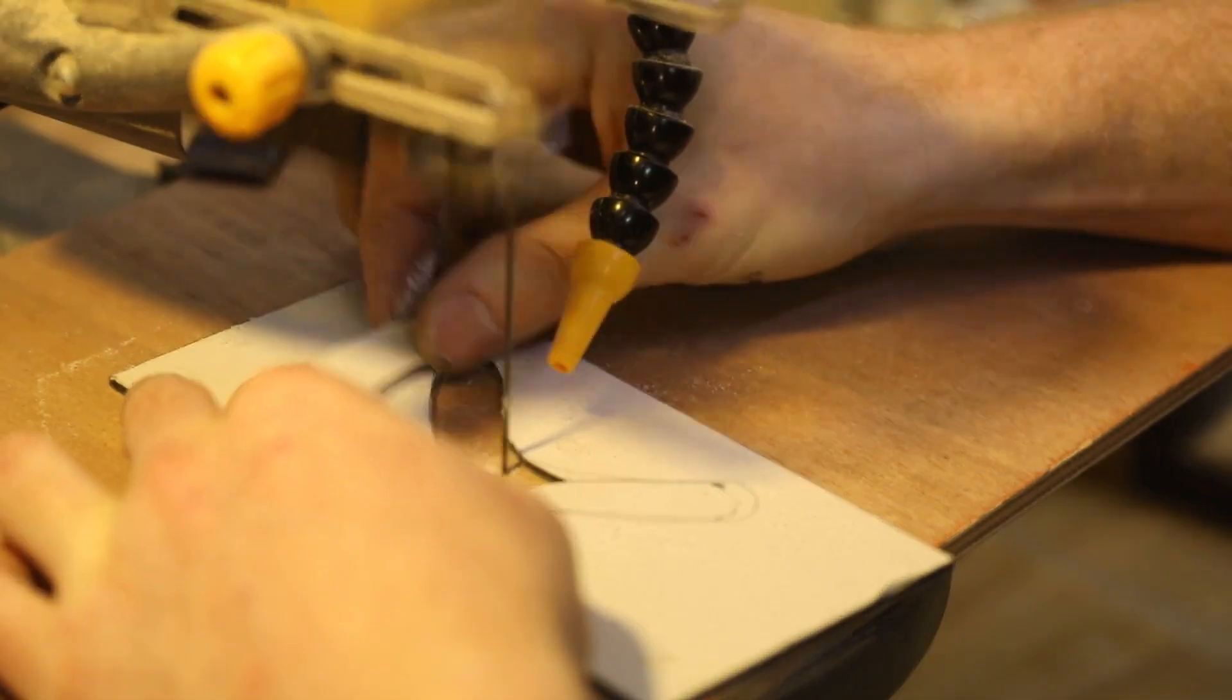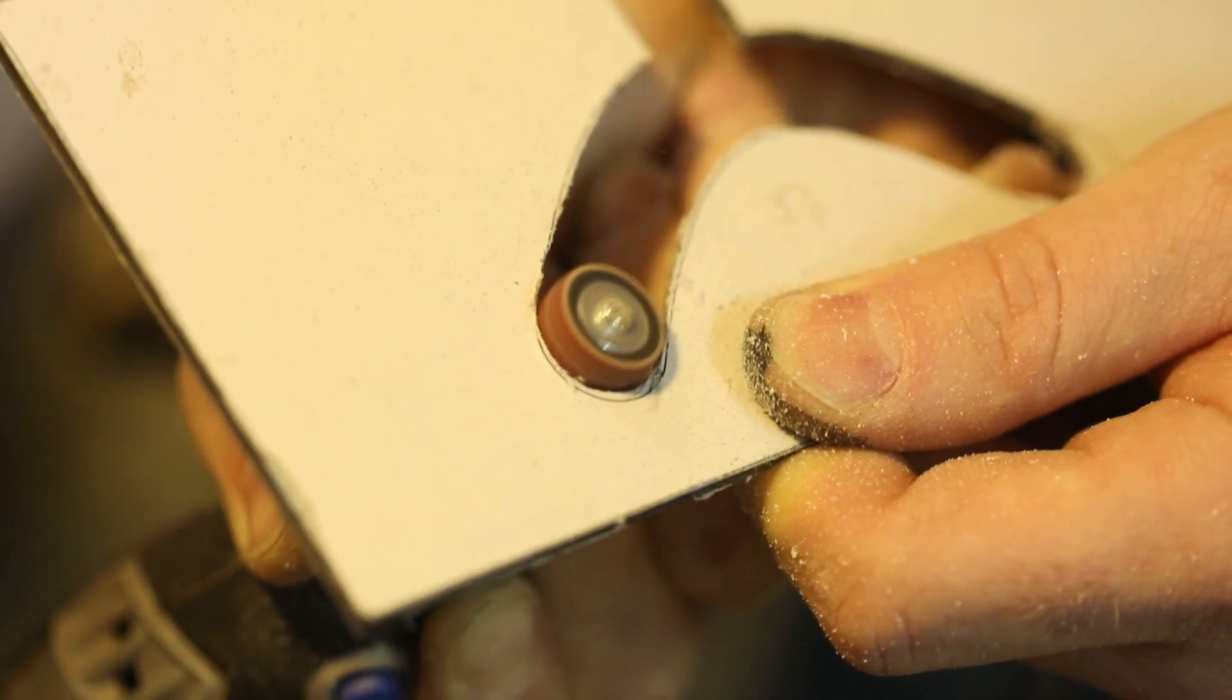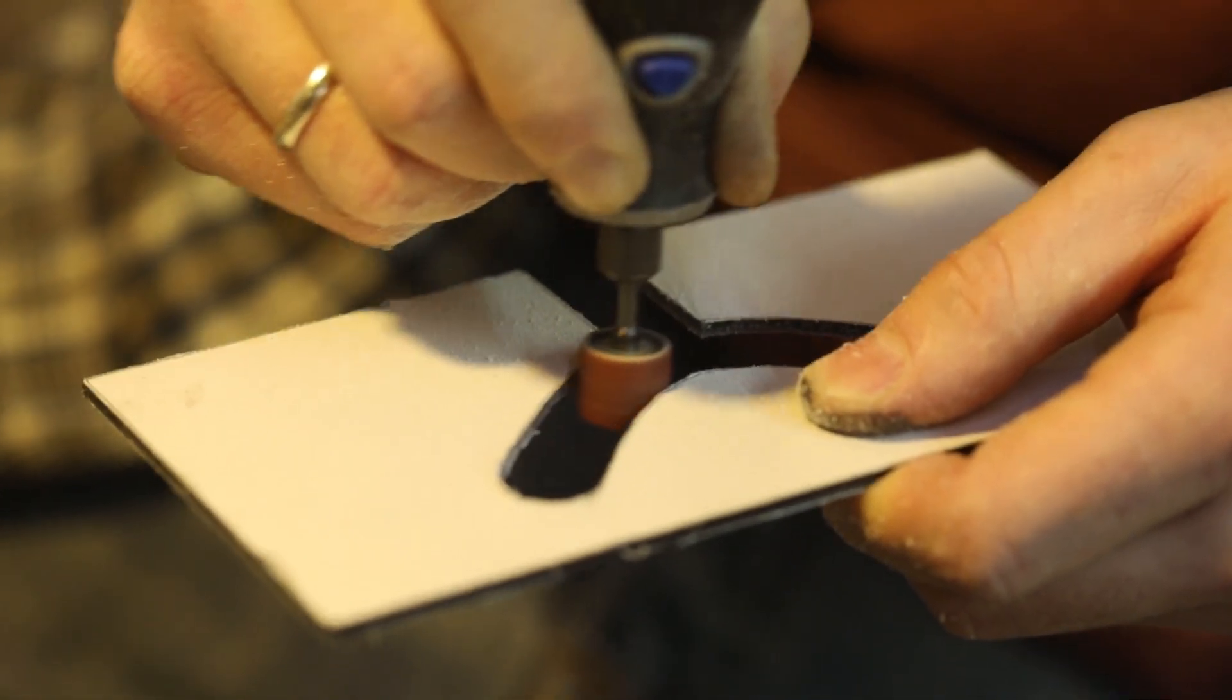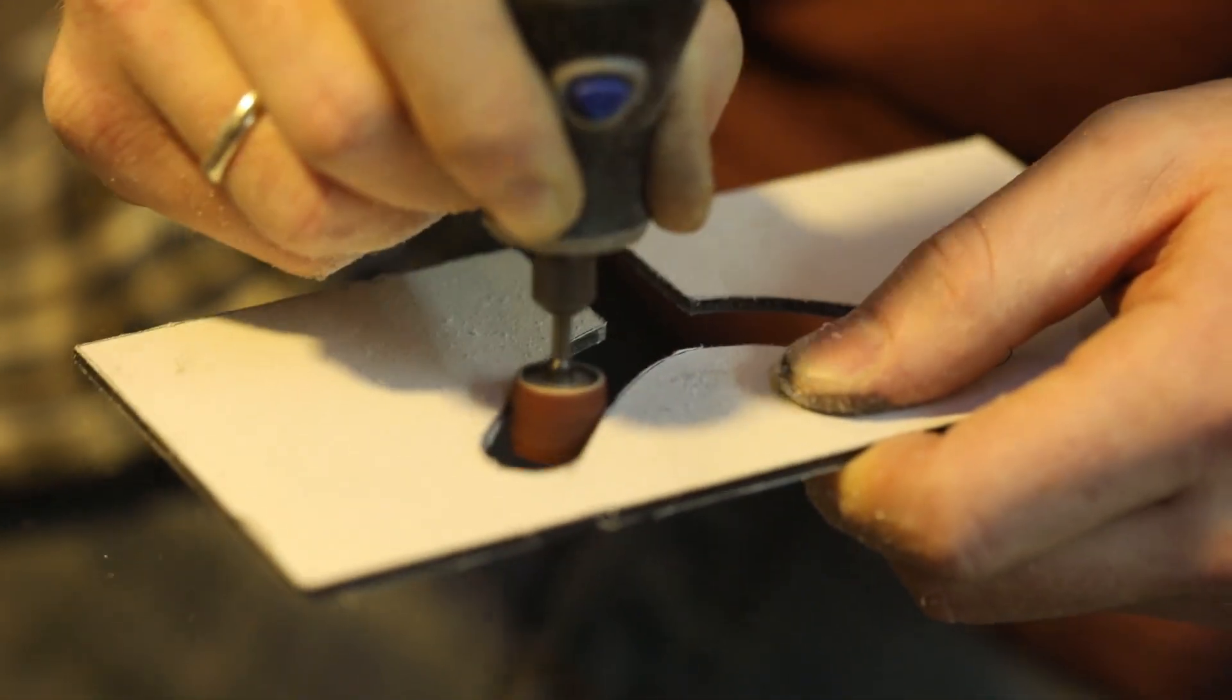Using a sanding drum on the Dremel, I cleaned up the curve, smoothing any kinks the saw might have left. This process results in a surprisingly smooth curve, which many people mistakenly thought was laser cut.